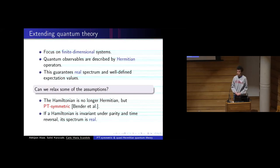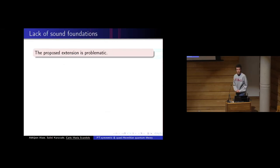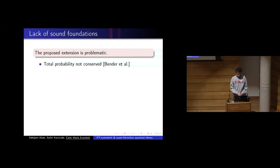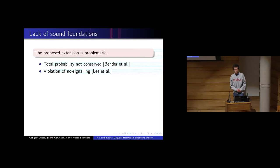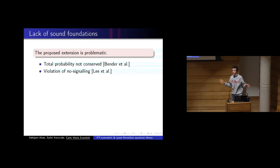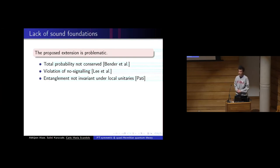However, PT symmetric quantum theory has many problems. The law of total probability is not conserved because exponentiating a non-Hermitian Hamiltonian gives a non-unitary evolution. Even worse, the theory becomes signaling, which is very problematic. Strange phenomena arise: entanglement is no longer invariant under local unitaries. People have proposed various ways to fix these problems, such as removing some states from the theory.